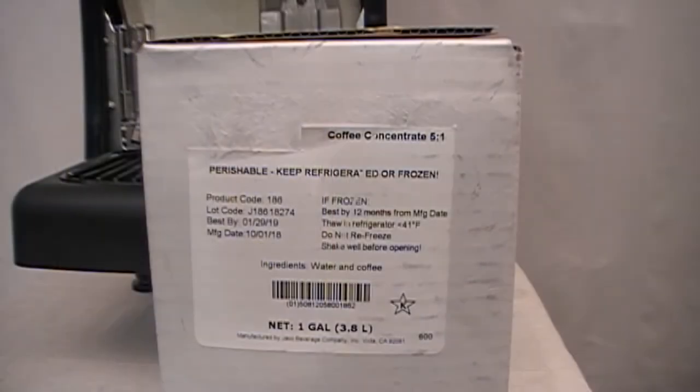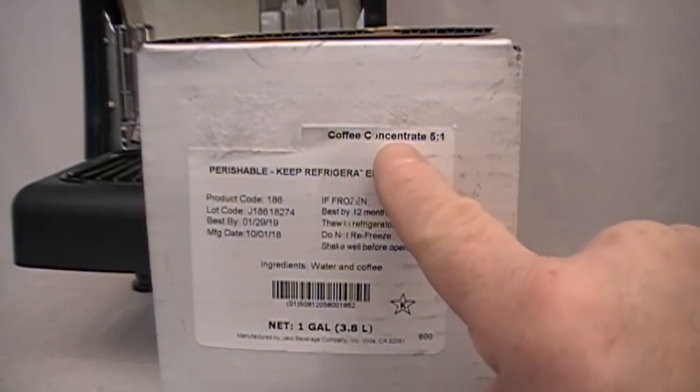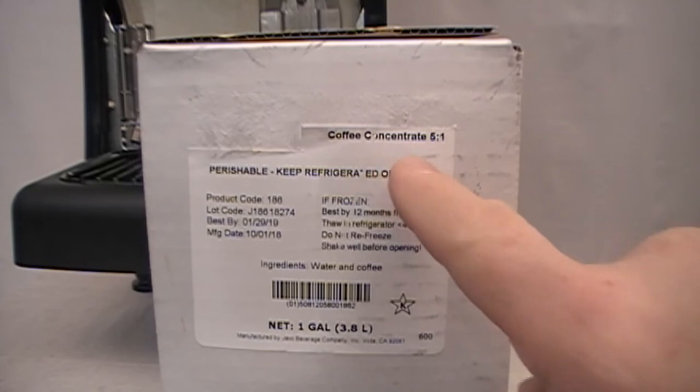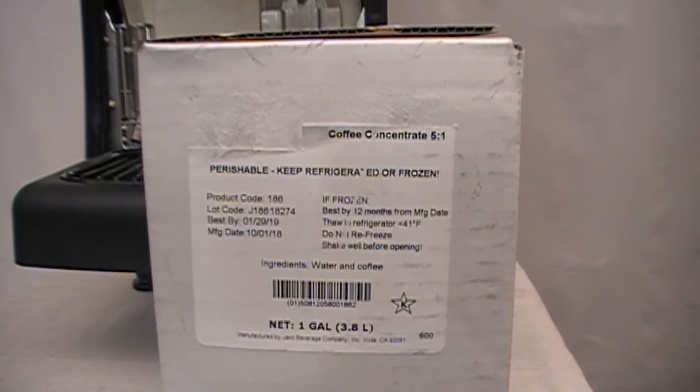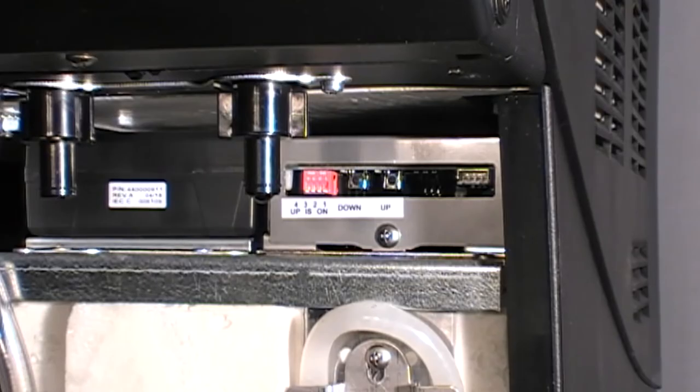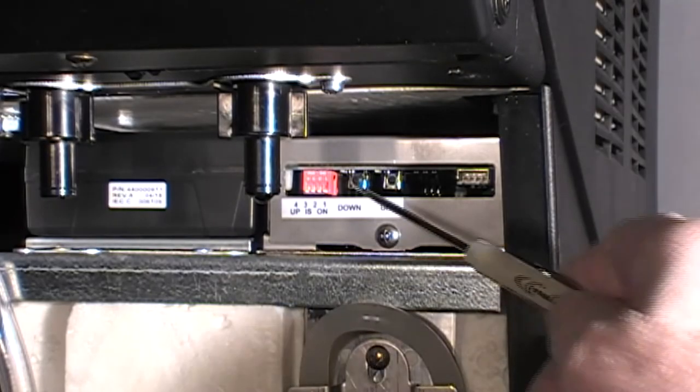To begin pouring cold brew coffee, begin by looking at the bib packaging label to identify the mixing ratio of the concentrate to be installed. A 5 to 1 ratio is being used for this video. With the front splash panel removed, locate the block of four white dip switches.